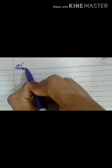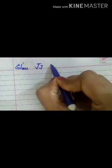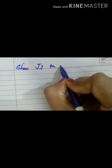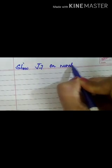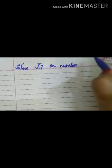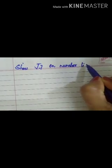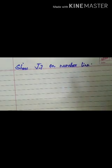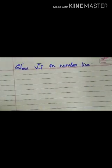The last question is: show √7 on a number line. This is a good sum to revise the whole thing starting from √2.